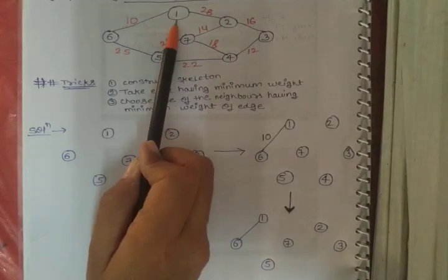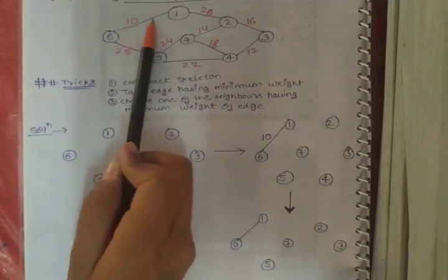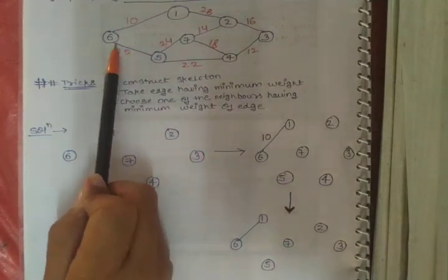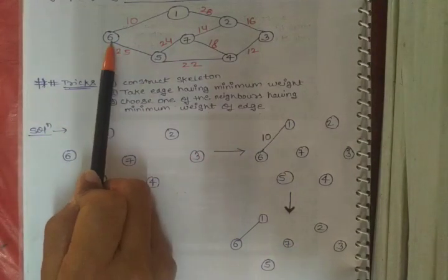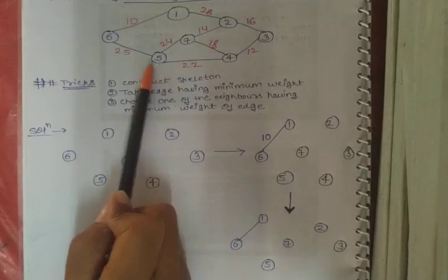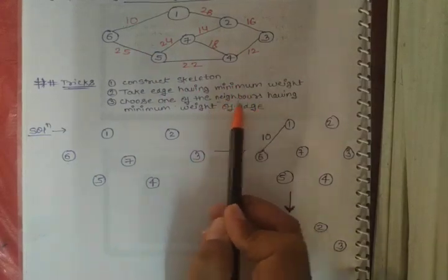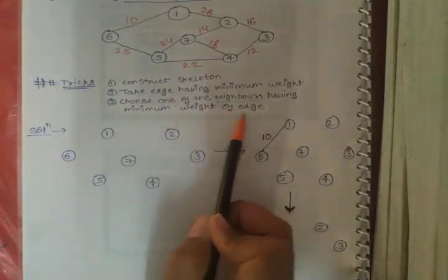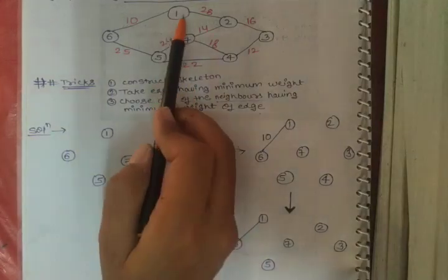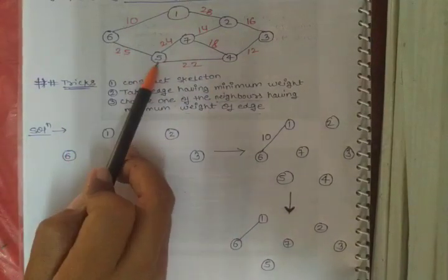Node 1 is already completed so we will not consider it again. The neighbor of node 1 is node 2, and the neighbor of node 6 is node 5. These are the unvisited neighboring nodes. The edge from node 1 to node 2 has weight 28, and the edge from node 6 to node 5 has weight 25.